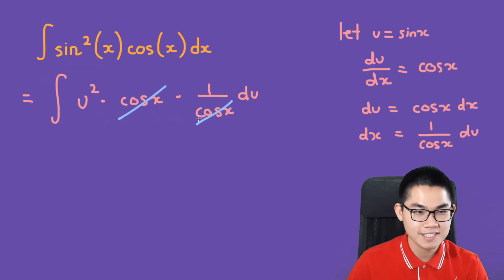As you can see, the cos(x) will cancel out, and that leaves us with the integral of u² du.